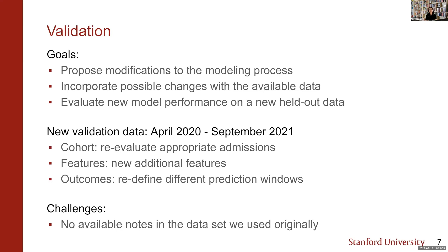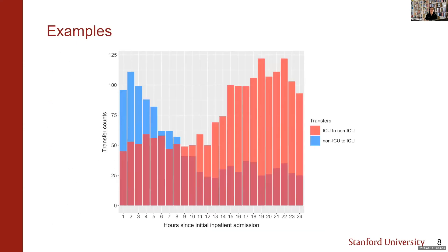Instead of looking only at prediction times T0 and T24, we may want to examine other time points depending on the prediction goal. This seems obvious in hindsight but took a year and a half to realize. Looking at transfer directions in and out of the ICU, there's a specific pattern at different times — six hours, nine hours, twelve hours — indicating different phenomena in terms of patients being transferred in and out of the ICU.